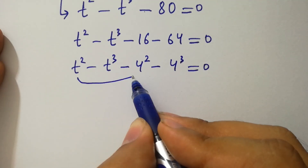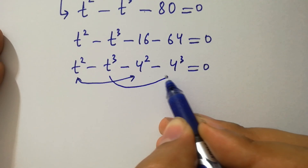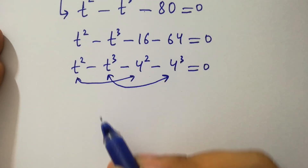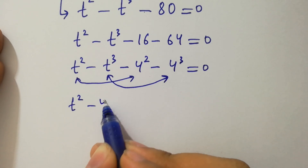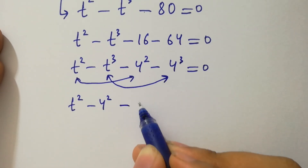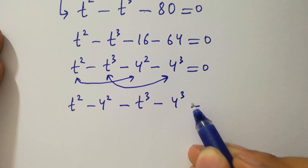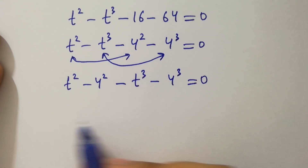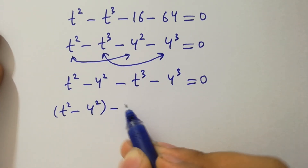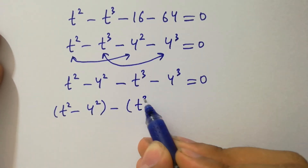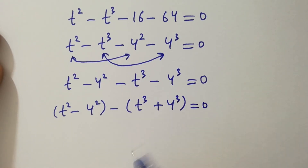You can see here t squared and 4 squared, and t cubed and 4 cubed. So we have here t squared minus 4 squared, minus t cubed minus 4 cubed, equals 0. We factor out to get t squared minus 4 squared minus the quantity t cubed plus 4 cubed equals 0.